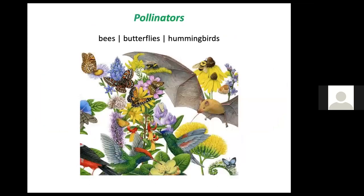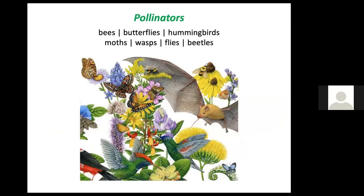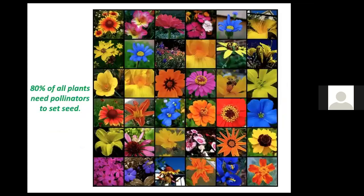Our pollinators in New England do not include bats — they pollinate in the southwest, but not here. However, we do have bees, butterflies, hummingbirds, moths, wasps, flies, and beetles pollinating flowers. 80% of all plants need pollinators to set seed, so it's quite an important role that these pollinators play.